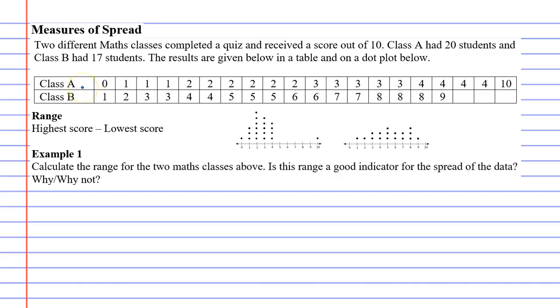We've got the same example that we looked at in the previous video. We have two classes, class A and class B, who completed a quiz. The results of this quiz are given in the table below. The scores are out of 10. You can also see them below as dot plots. This is class A as a dot plot, and this is class B as a dot plot.